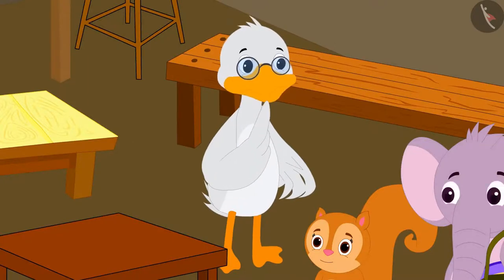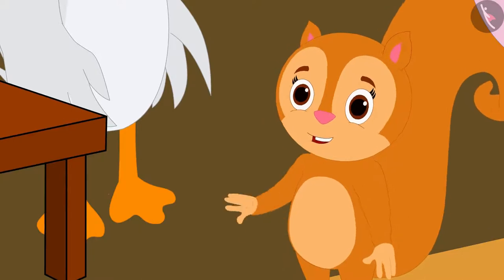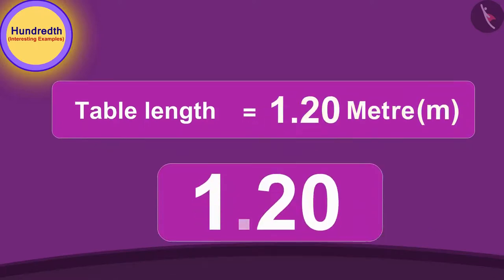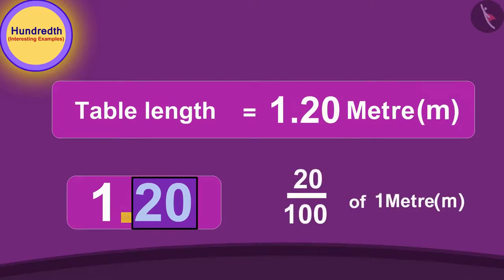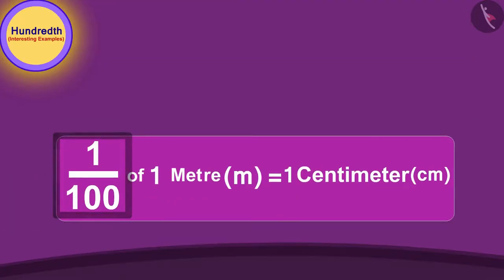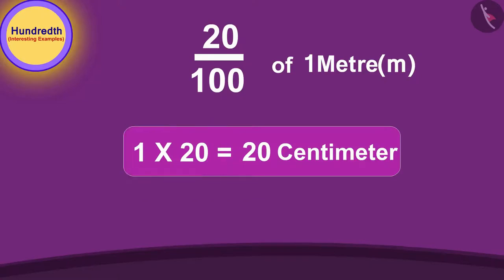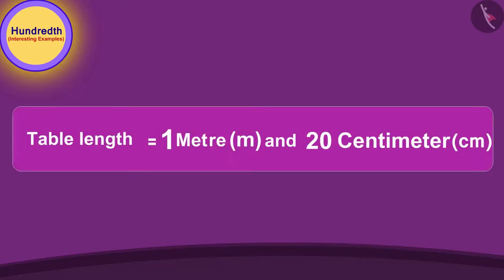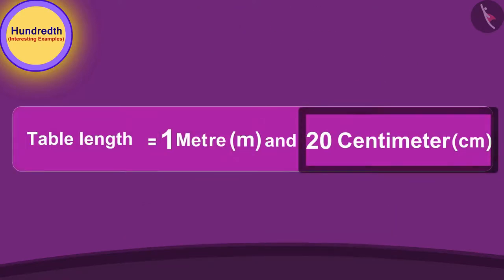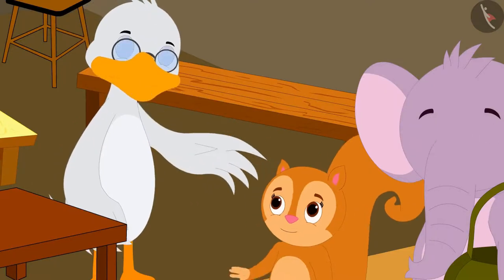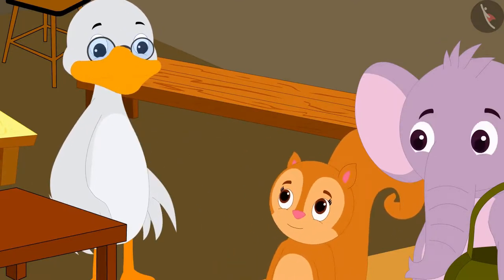"Okay, now I understood, Uncle." The length of this table is 1.20 meters. 20 hundredths of a meter is written after the decimal. Because one hundredth part of a meter is equal to 1 centimeter, 20 hundredths of a meter will be equal to 20 centimeters. So the length of this table will be 1 meter and 20 centimeters. "Well done, Chanda. You learned very quickly," Uncle said to Chanda.